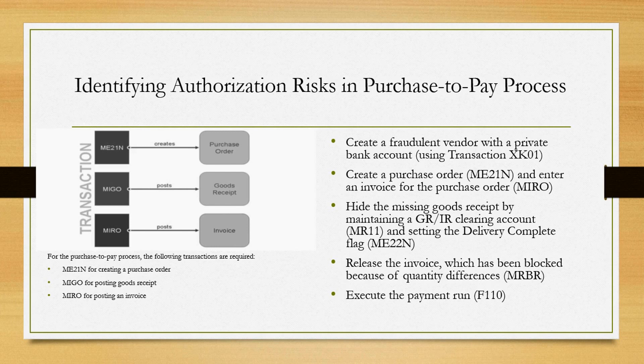First, a person creates a fraudulent vendor with a private bank account using transaction XK01. Then they create a purchase order using transaction ME21N and enter an invoice for the purchase order using T-code MIRO. Then they hide the missing goods receipt by maintaining a GR clearing account using transaction MR11 and set the delivery complete flag using ME22N. They then release the invoice, which has been blocked due to quantity differences, by performing MRBR, and finally execute the payment run using T-code F110.